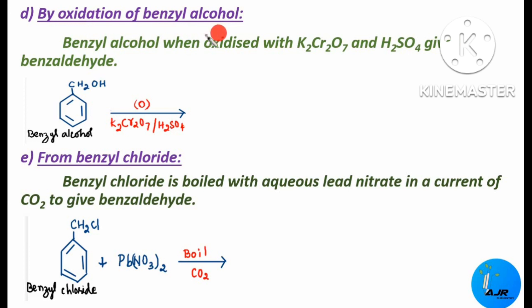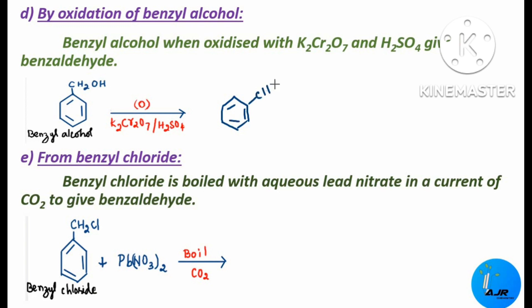The next method is by oxidation of benzyl alcohol. When benzyl alcohol (CH2OH attached to a benzene ring) is oxidized in the presence of K2Cr2O7 — that is potassium dichromate — and sulfuric acid, we get benzaldehyde. There is a removal of a water molecule in the process. So this is the preparation of benzaldehyde by oxidation of benzyl alcohol.